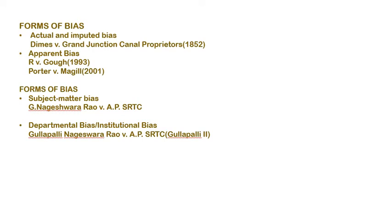Apparent bias is present when the judge or decision-maker is either a party or has an interest in any other proceedings or in the outcome, but their conduct or behavior creates a suspicion that the decision is partial. The real likelihood test comes into play when the court considers all the facts and feels that a real likelihood of bias exists. In the R versus GOG case, the House of Lords applied this test and said that the possibility of bias should be emphasized rather than the probability of bias.